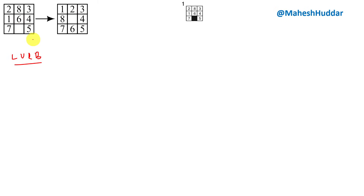At a given point of time we may not be able to apply all four moves. For example, at this particular point, the blank can move left, up, and right — the bottom move is not possible. That is one thing we need to remember. We will start with the initial state and apply BFS until we reach the goal state.